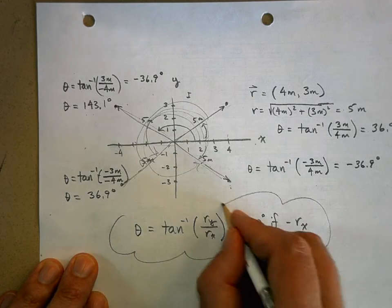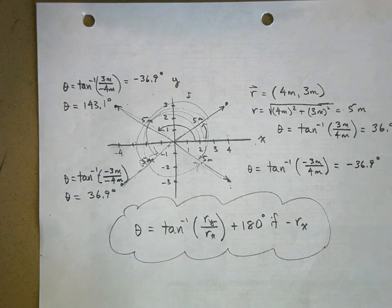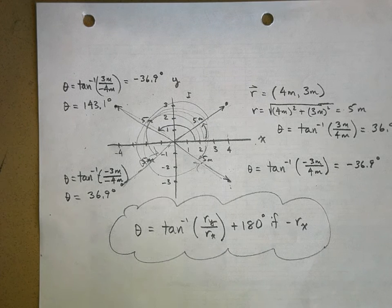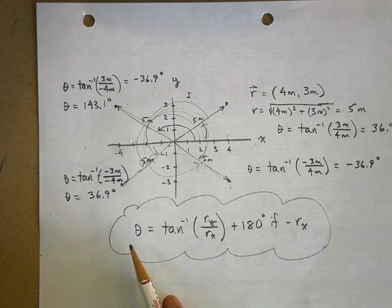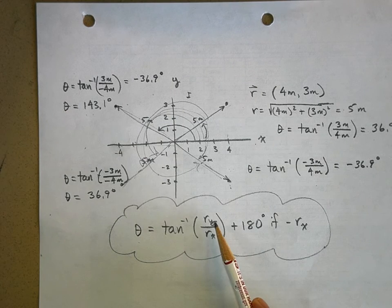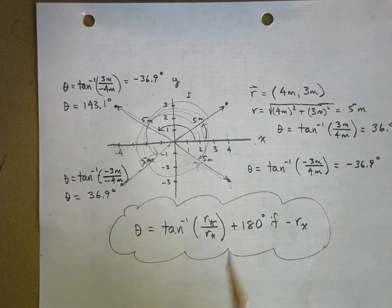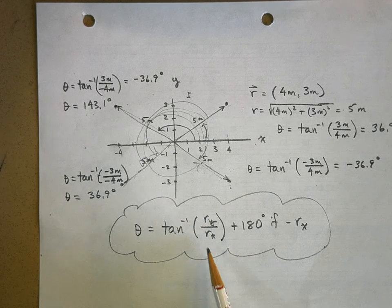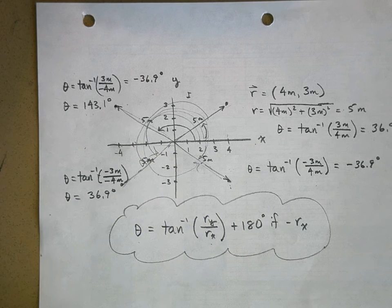So, that's what you have to know in order to convert from rectangular to polar coordinates. If you want that angle, if I give you the y and the x, if the x is negative, you have to add 180 degrees to your answer.